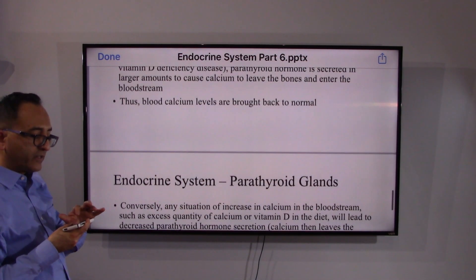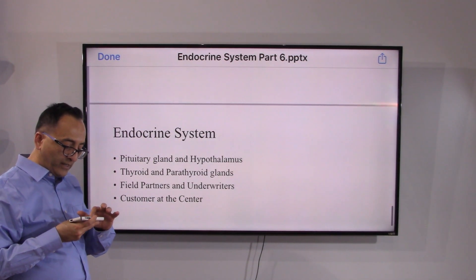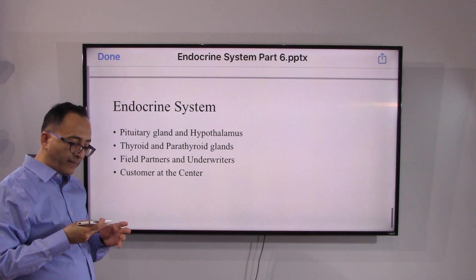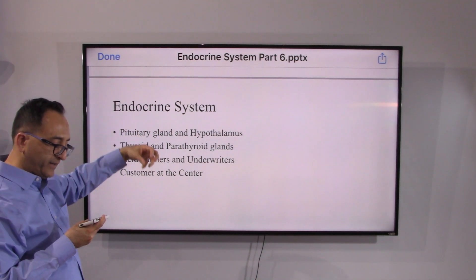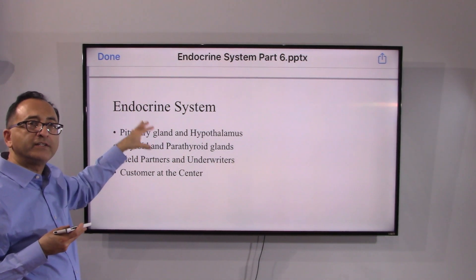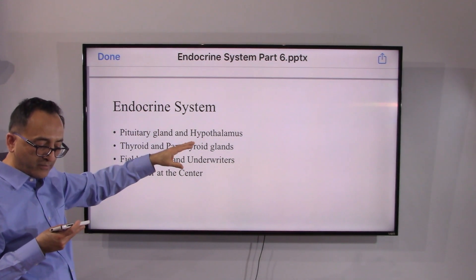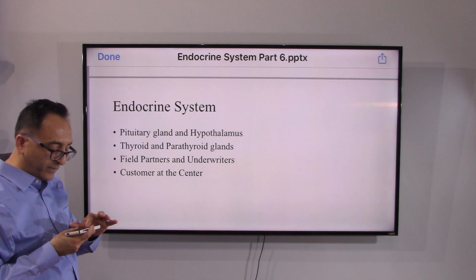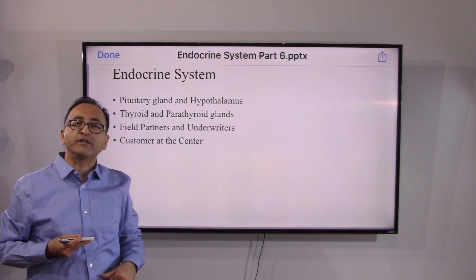That pretty much covers the basics of thyroid and parathyroid. When we come back we'll look at what happens if something goes wrong. Just like the pituitary gland and hypothalamus work together and then signal down to the thyroid and parathyroid glands, this presentation series is intended for field partners, underwriters, and customers. Just as thyroid and parathyroid work together, field partners and underwriters work together to ultimately serve the customer. We'll come back to look at the disorders. See you soon, take care, bye.